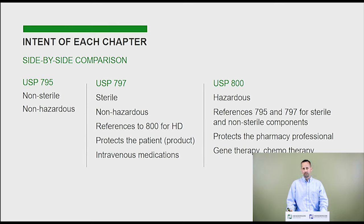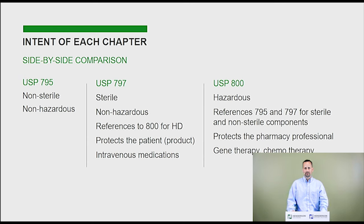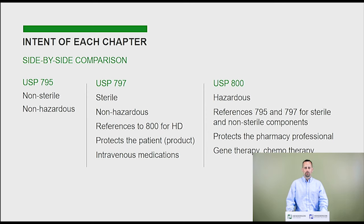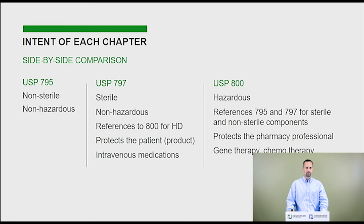USP 797 refers to USP 800 now for any hazardous drugs. USP 800 is brand new — it's never been out before — and it's for any hazardous drugs. Its purpose is really to protect the pharmacist. Previously, someone handling a hazardous drug day after day where one or two touches isn't really going to hurt you, but continued contact with something hazardous means small exposures can have a compounding effect on your health. It's really important to protect these people who are creating chemotherapy drugs for cancer patients or gene therapy drugs for others. Just as USP 797 is intended to protect the health of the patient, we need to make sure our employees and hospital workers are protected as well.